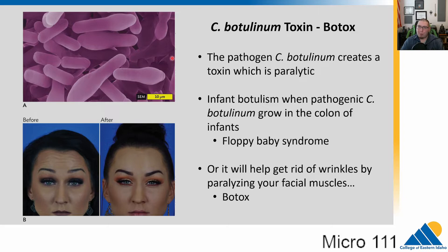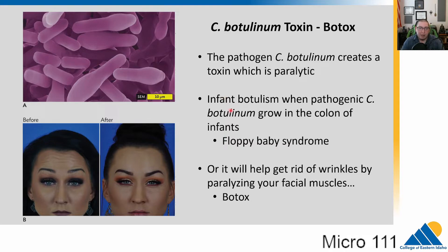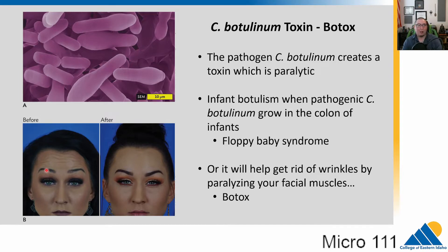Clostridium botulinum makes a toxin that is paralytic, causing the nervous system to shut down. When this gets into the gut tract of infants, it can cause paralysis, often leading to what's called floppy baby syndrome, because they are literally paralyzed. This is of concern to parents, particularly in canned goods, because this can grow as an anaerobe and that spore really protects it. Or if you're interested in getting rid of wrinkles, you could inject Clostridium botulinum toxin — also known as Botox — which will paralyze your facial muscles and reduce wrinkles.